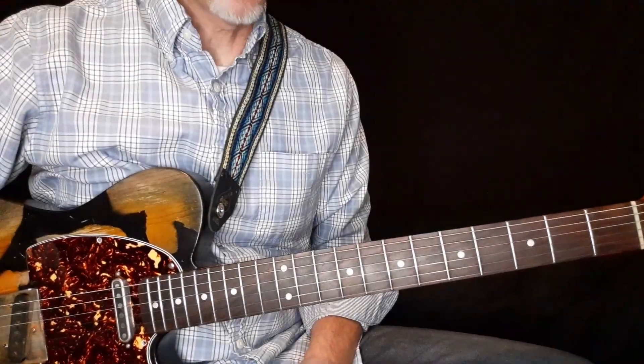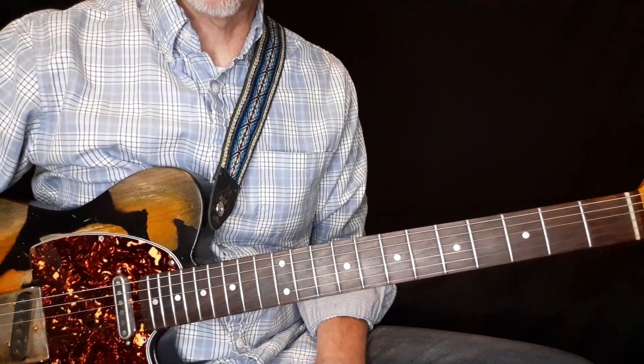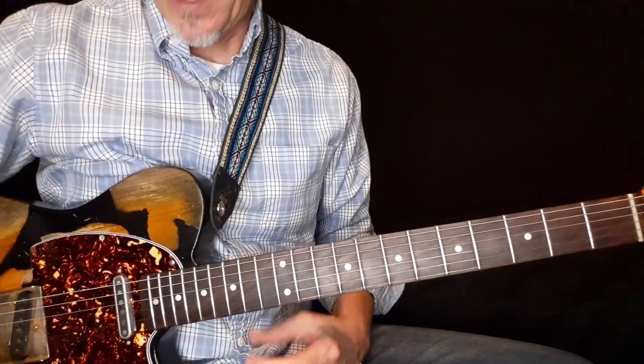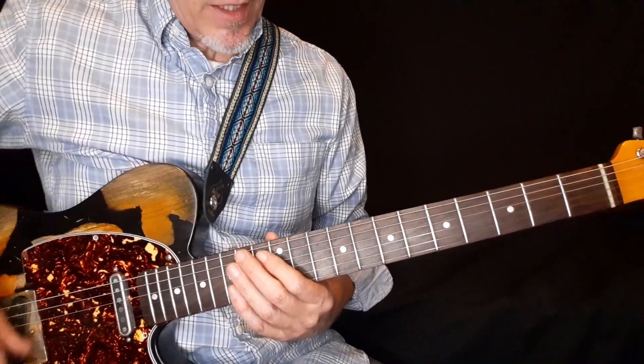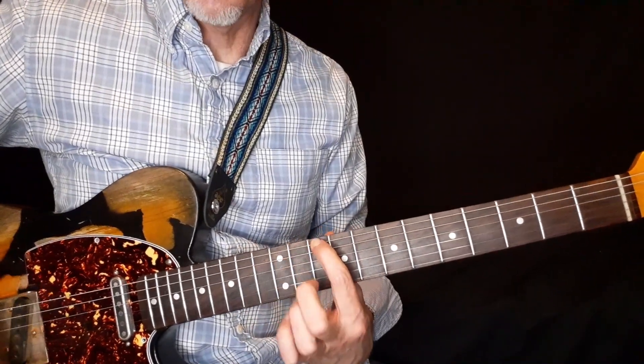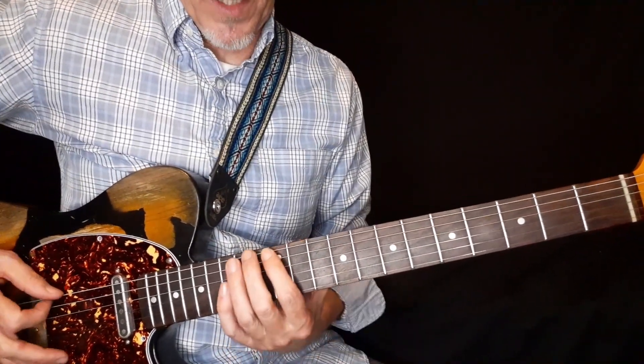As promised, we're going to be talking about the major pentatonic scale versus the minor, as we learned in our previous lessons. The minor, we always start it out, let's say we're in the key of E, box one.